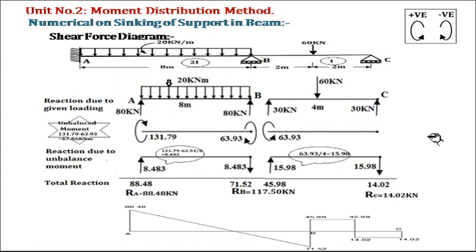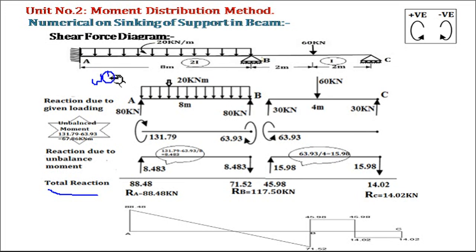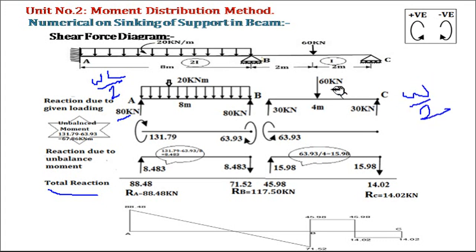Next, we draw the shear force diagram. For this we need the support reactions, which arise from both the given loading and the unbalanced moments. In member AB, loaded by UDL, the end reaction due to load is WL/2 = 20 × 8 / 2 = 80 kN at each end — 80 at A and 80 at B. In member BC, with a central point load, the end reaction is W/2 = 60/2 = 30 kN at each end — 30 at B and 30 at C.